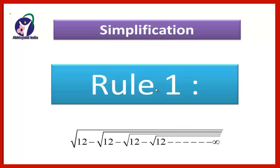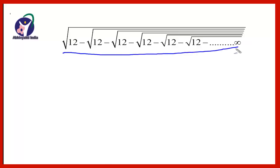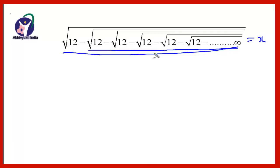So here we will see the first question on the screen. This can be solved in a general way. First, we will assume that this expression is equal to x. And this part — root of 12 minus root of 12 up to infinity — can also be equal to x. So this can be written simply as: root of (12 minus x) is equal to x.